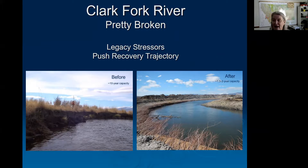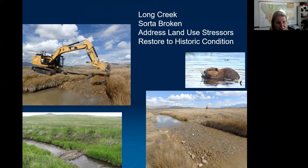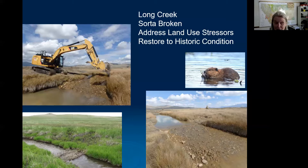Then there's the BDA world — where a lot of the degradation is from grazing, a little down-cutting, and beaver being trapped out. Here you can really address land use stressors and probably truly restore it back to a historic condition, either through building BDAs or higher riffles that promote aggradation and reconnect systems vertically. These are probably the best bang for your buck — very low-tech, very inexpensive, and you get a really good response. But where you are in the trajectory really matters.